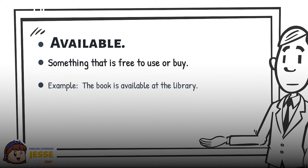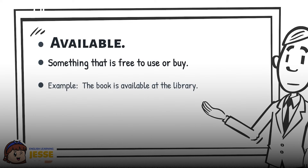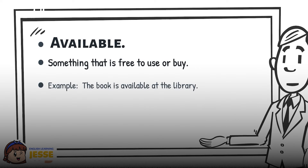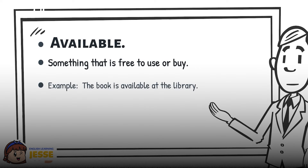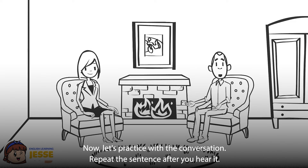Available: something that is free to use or buy. Example: The book is available at the library. Now let's practice with the conversation. Repeat the sentence after you hear it.